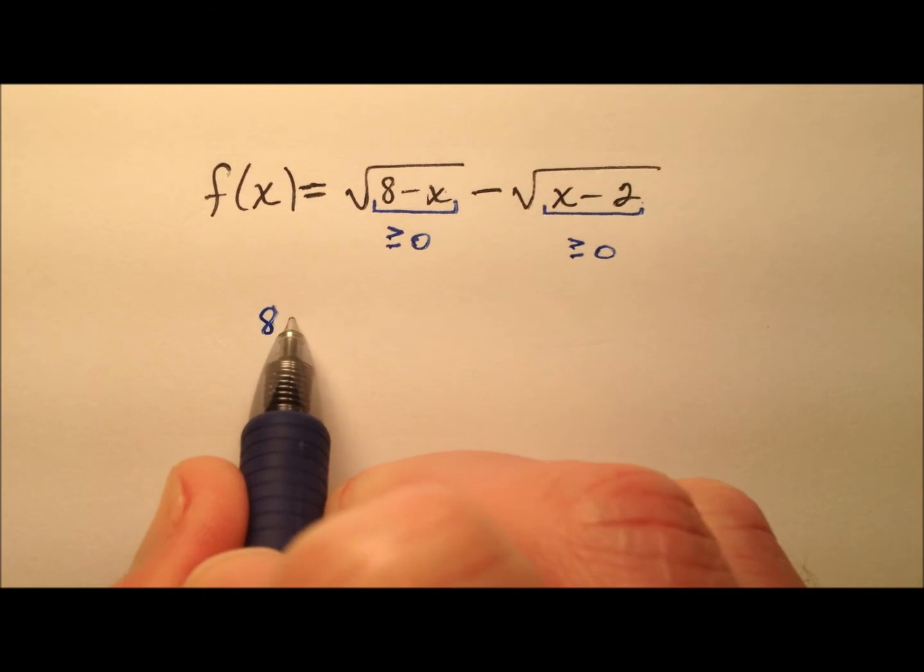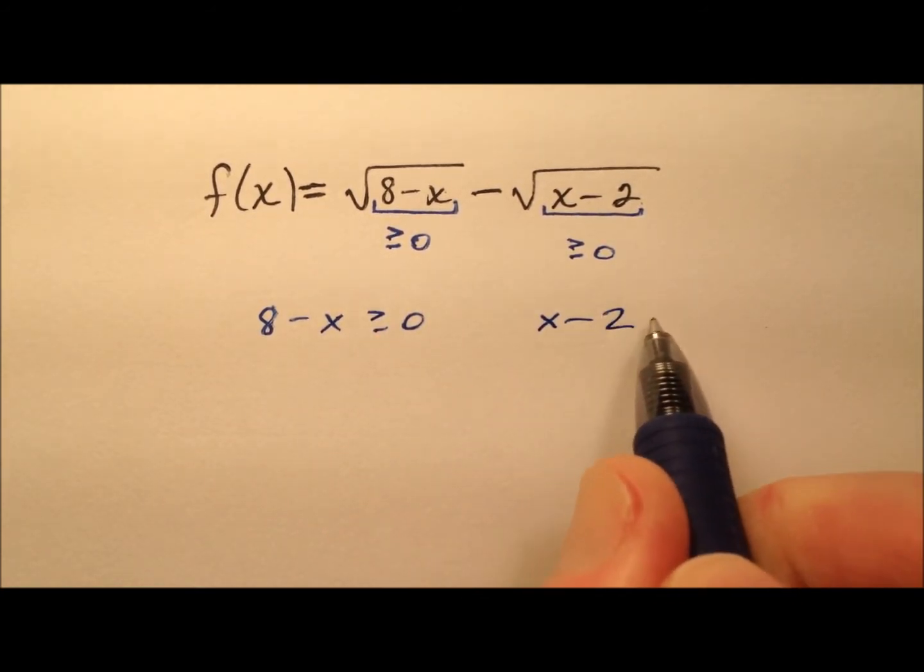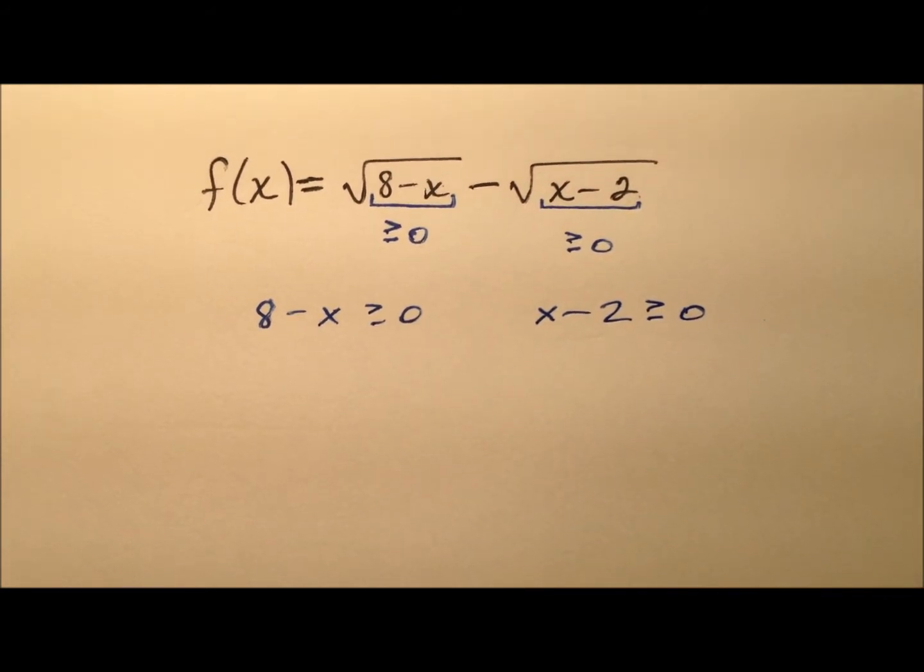So we're going to take each one of these separately. So 8 minus x has to be greater than or equal to 0 and x minus 2 also has to be greater than or equal to 0. And so we'll just solve each one of these inequalities independently.